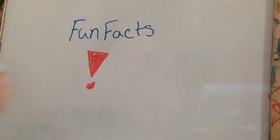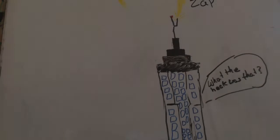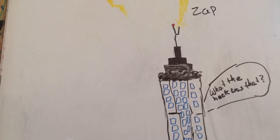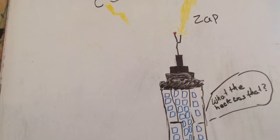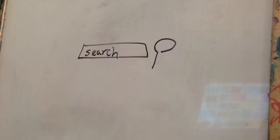Fun facts that will blow your mind away, presented by Rapid Science. Did you know that the Empire State Building gets struck by lightning at least 25 times a year? Also, Google, the search engine, used to be called BackRub.